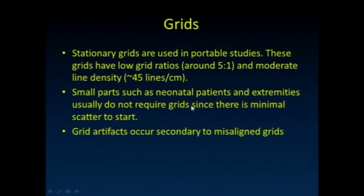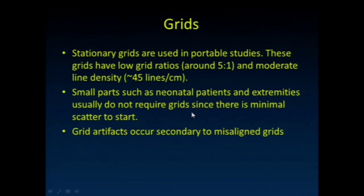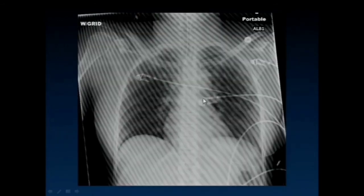For portable studies, stationary grids are used with lower grid ratios and moderate line density. Sometimes, if not placed well, you can see grid artifacts on portable studies. Small parts and neonatal patients don't require grids because there's minimal scatter to start with—adding a grid would only increase dose unnecessarily.